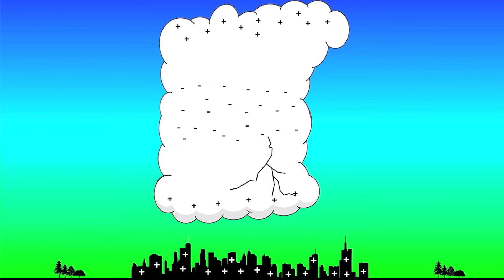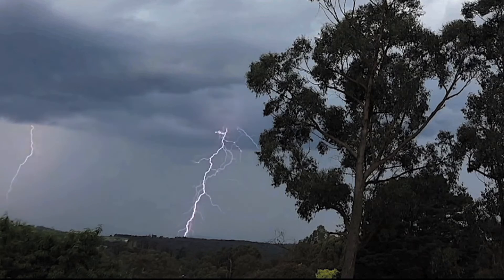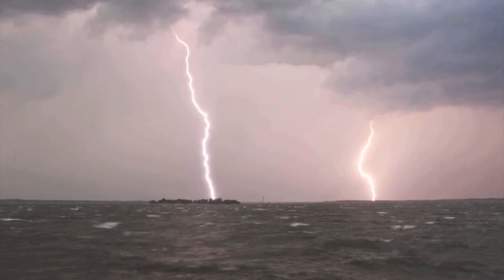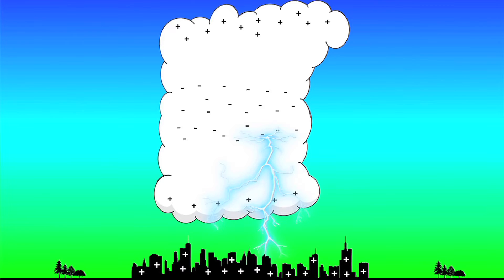Meanwhile, a similar finger called a streamer reaches out from its target, and when they meet — zap! In a fraction of a second, up to a billion volts of electricity flow along the lightning path.